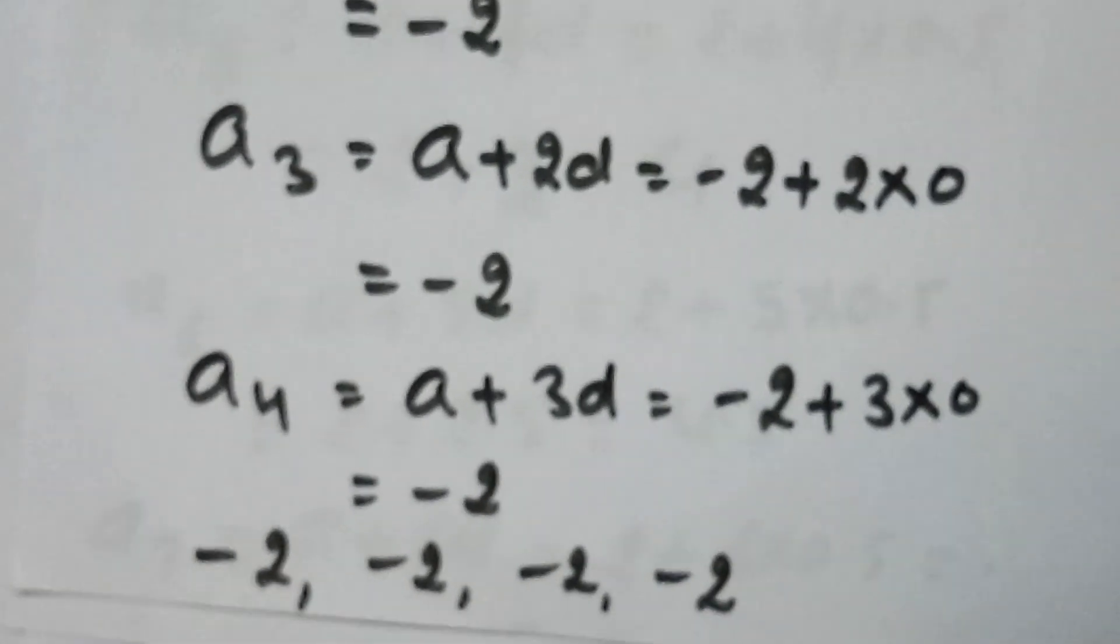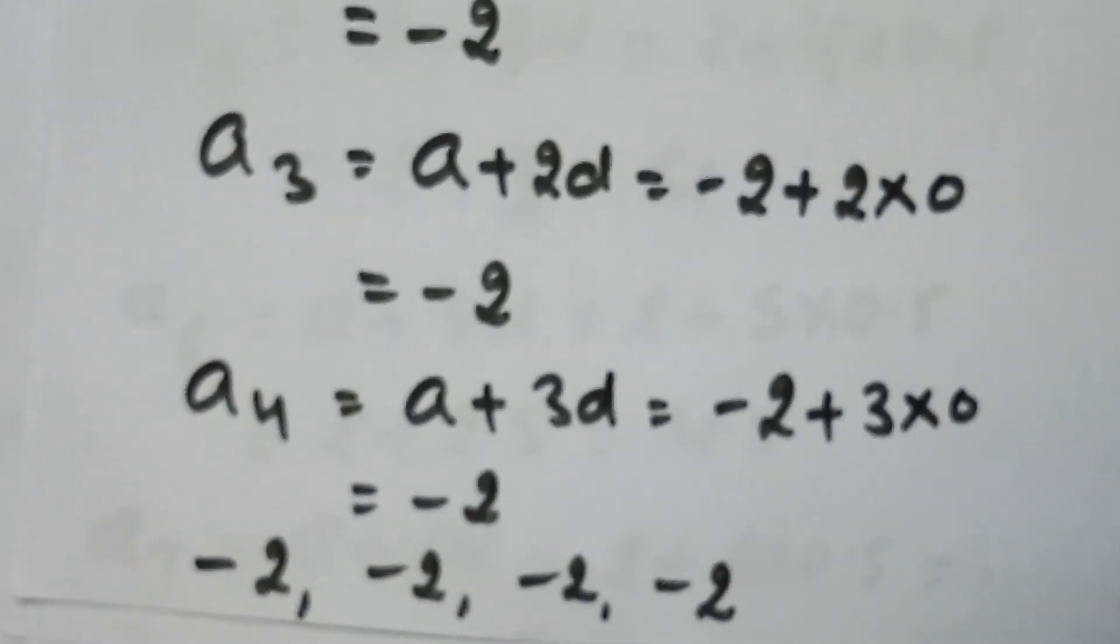So these are the four terms of the AP: minus 2, minus 2, minus 2, and minus 2.